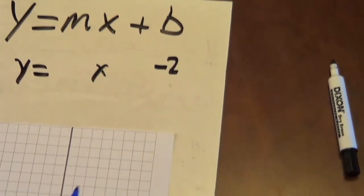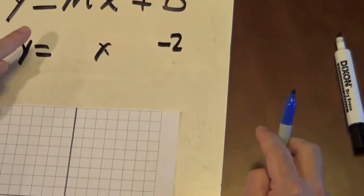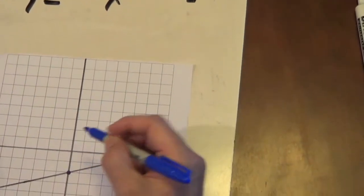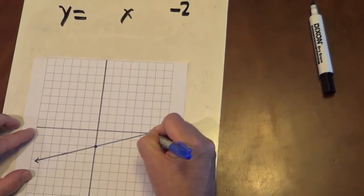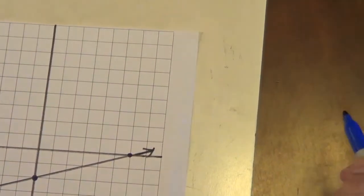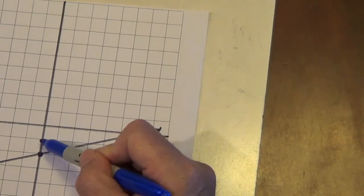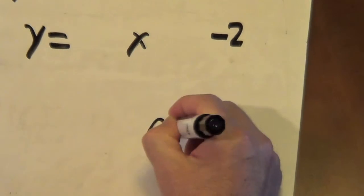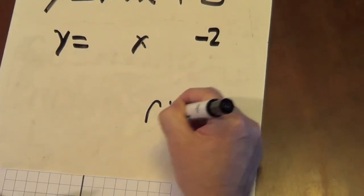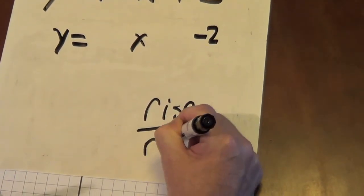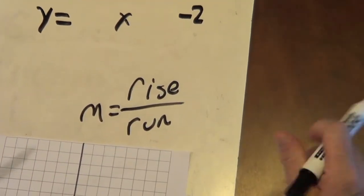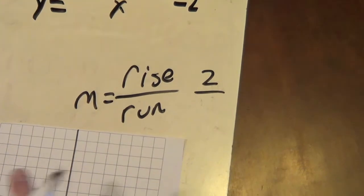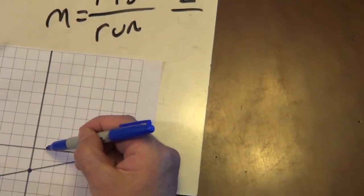So in order to find my m, which is my slope, I will find another point, and I'm going to find this point right here. And I will rise 1, 2. So my rise over run will give me my m, my slope. And my rise is 2. And my run will be 1, 2, 3, 4, 5, 6 spaces.